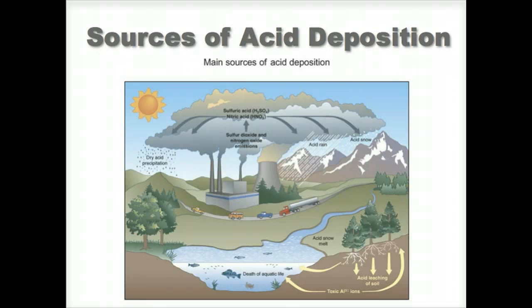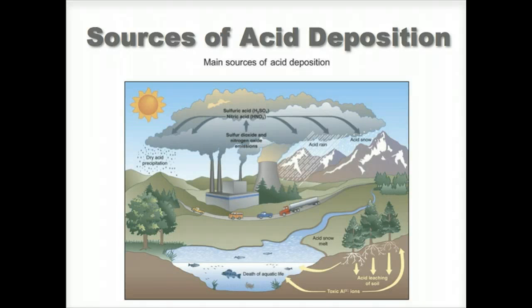How does the sulfur get into the atmosphere? The burning of coal is a major generator of SOx and NOx. Coal contains 1–3% sulfur, and coal-burning power plants usually burn about 1 million metric tons of coal a year. The burning of sulfur with oxygen produces sulfur dioxide gas, which is poisonous.